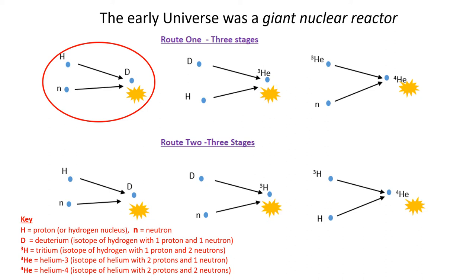The deuterium then combines with another hydrogen nucleus or proton to give an isotope of helium. This is called helium-3. This helium isotope has two protons and one neutron. The helium-3 then combines with another neutron to form helium-4, ordinary helium, which has two protons and two neutrons in its nucleus.